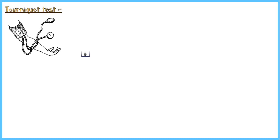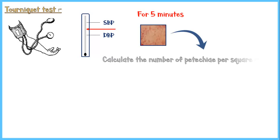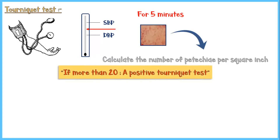A tourniquet test is performed by inflating a blood pressure cuff around the upper arm to a midpoint between systolic and diastolic blood pressure for 5 minutes. After removing the cuff, the number of petechiae per square inch is calculated. If it is more than 20, the tourniquet test is considered positive.